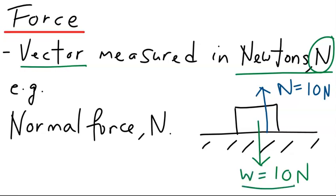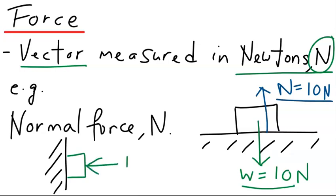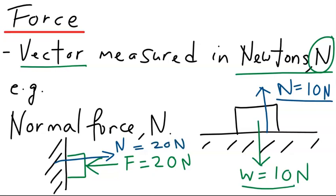Another example of normal force: if you have a wall and you press a box horizontally against it by pushing with a force of 20 Newtons, the wall would press against the box in the opposite direction. This normal force will have the same magnitude, 20 Newtons. The direction of normal forces is always 90 degrees with respect to the surface on which the object is pressed.